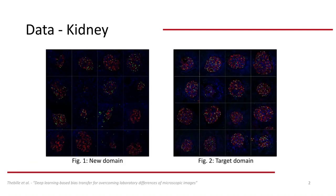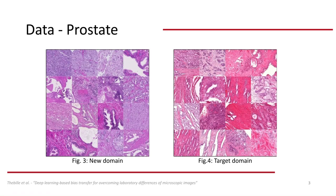Our experiments revolved around two types of microscopic images: immunofluorescent kidney biopsies and H&E stained prostate biopsies. Here you can see example images of the to-be-transformed and the target domain for the kidney biopsies, which originate from different hospitals and have been imaged by differing microscopes. The target domain consists of 269 and the new domain consists of 375 images. For the prostate biopsies, we use the publicly available dataset as the to-be-transformed domain. Here the target domain consists of 2866 and the new domain of 886 images.